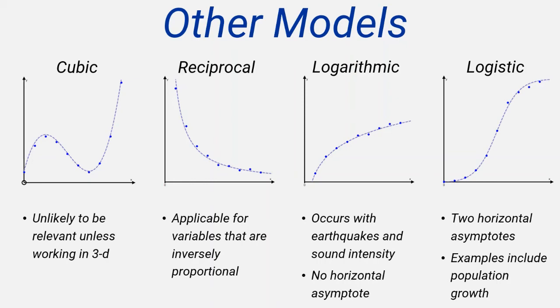Logistic models commonly occur with population data, or other contexts where exponential growth might be expected, but the growth would not be infinite. The number of people infected by a virus might follow a logistic model because, as more people have been infected, there are fewer people left in the population to become infected, and so the growth rate will start to slow.